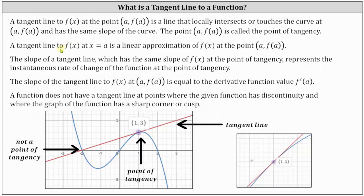A tangent line to f of x at x equals a is a linear approximation of f of x at the point a comma f of a. This becomes more clear again as we zoom into the point of tangency, which is shown here on the right. Right around the point one comma three, the red line is a very good approximation for the curve, which is why we say the tangent line is a linear approximation of the function f of x at the point one comma three, as well as points very close to the point one comma three.